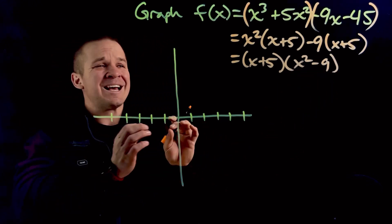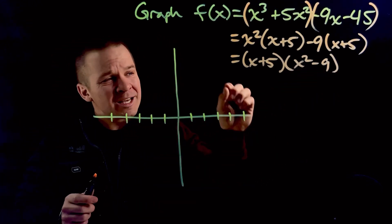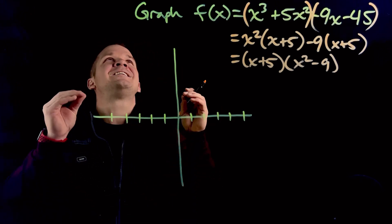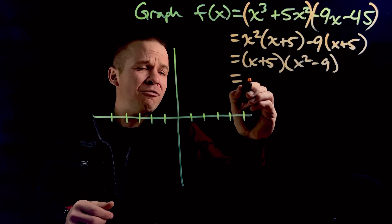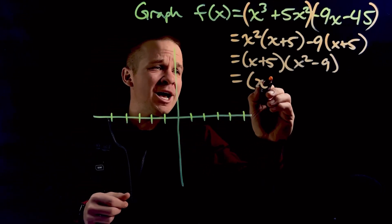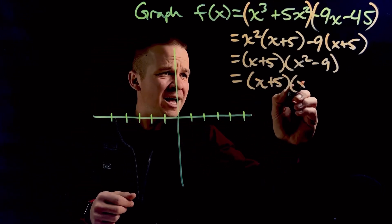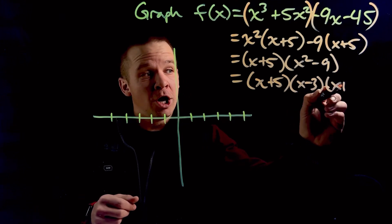Now, this is bonus time, folks. Bonus time. I got a binomial there, which is a difference of two squares, which means I get to keep on factoring. I love when I get to keep on factoring. All right, so we get x plus 5 here. Then I got x minus 3, x plus 3.